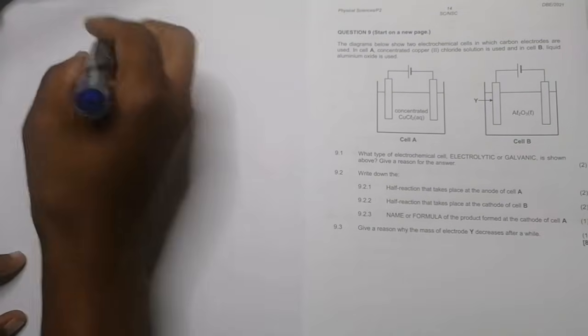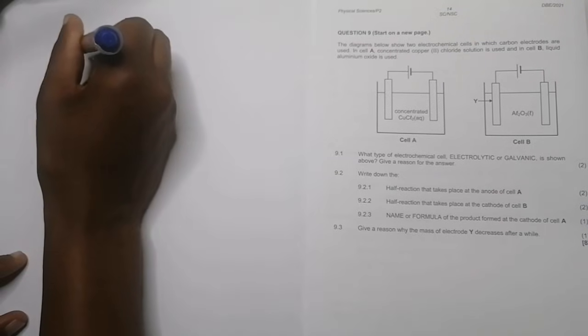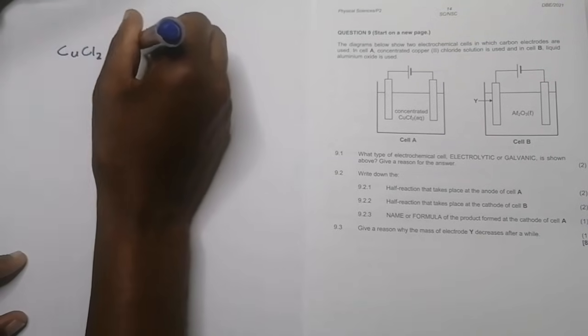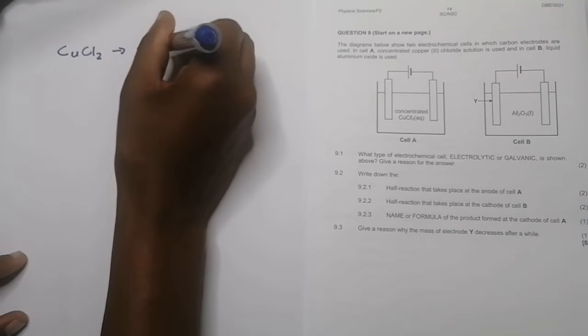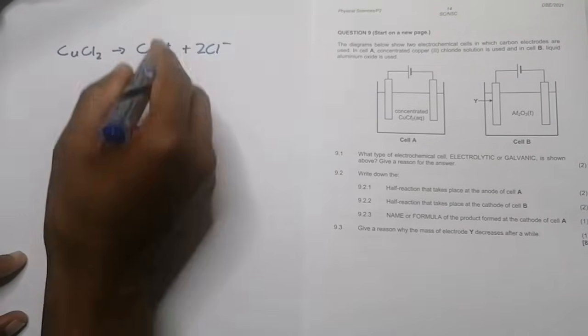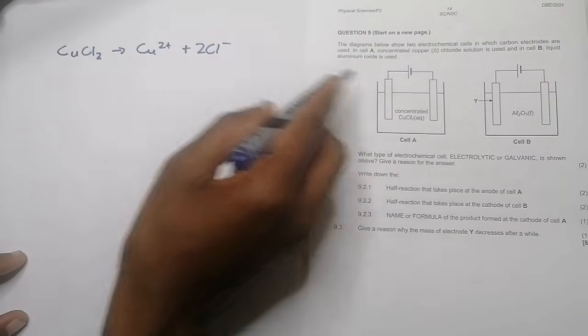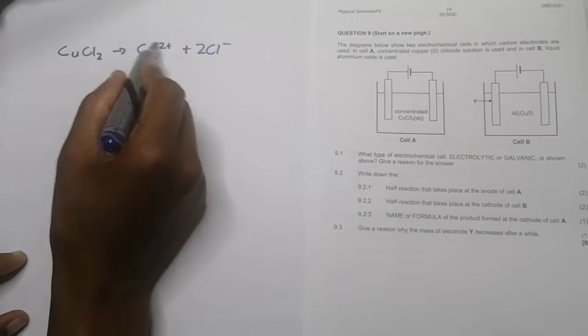So on copper chloride, what you actually have is that it breaks down to become Cu²⁺ and 2Cl⁻. Those are the ones that are going to take part in that reaction there.